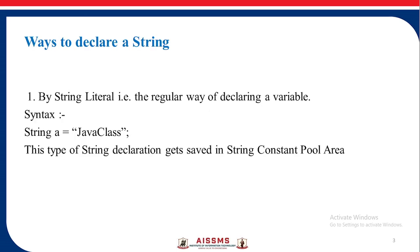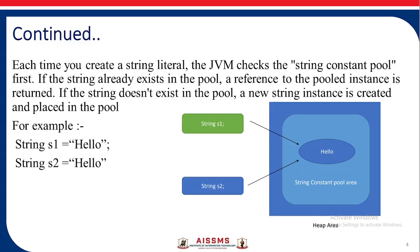The ways to declare a string are: first, by string literal, which is the regular way of declaring a variable. The syntax is: String a = "java class". This type of string declaration gets saved in the string constant pool area. Each time you create a string literal, the JVM checks the string constant pool first. If the string already exists in the pool, a reference to the pooled instance is returned. If it doesn't exist, a new string instance is created and placed in the pool.